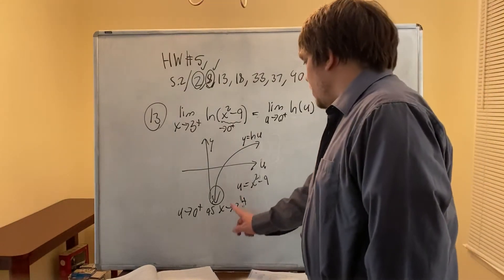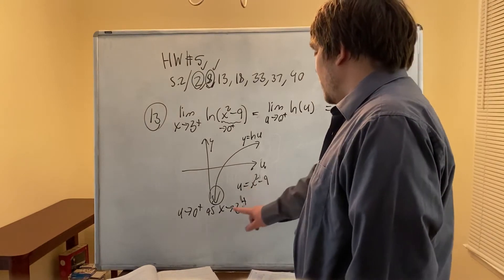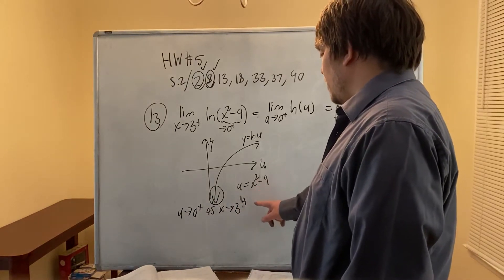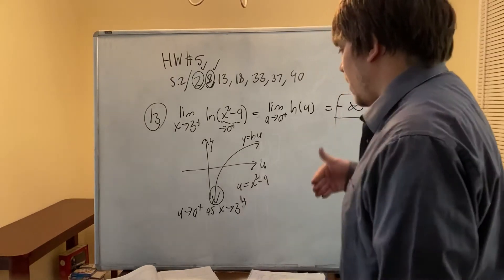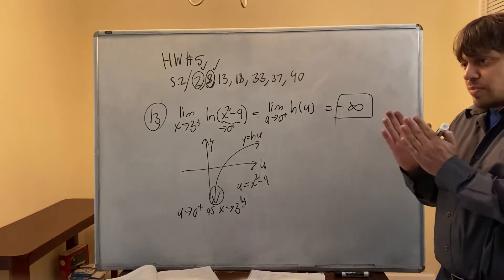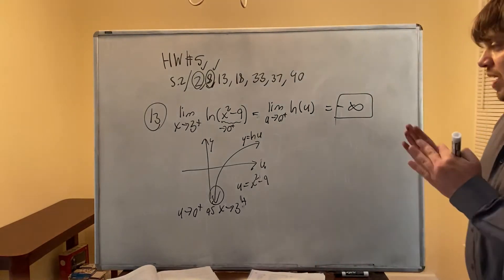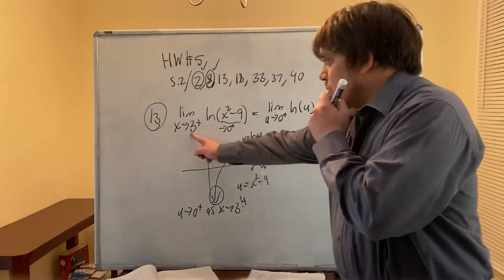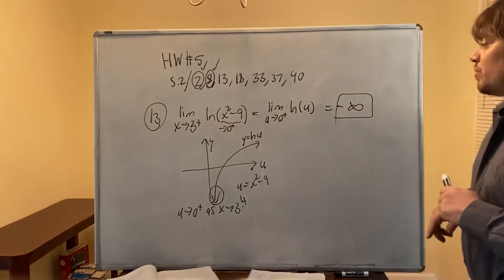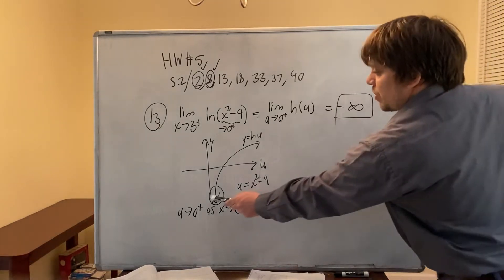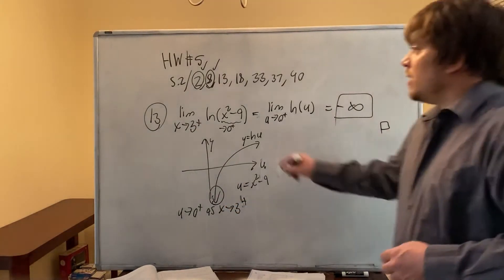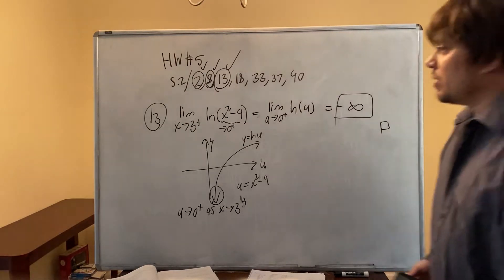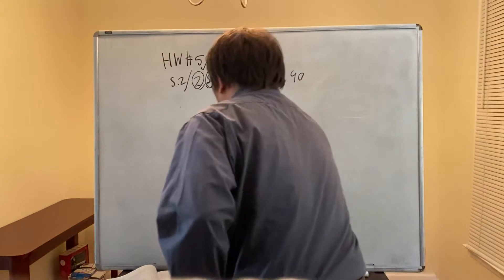To be more explicit: let u equal x² minus 9. As x approaches 3 from the right, x² approaches 9 from the right — meaning the values are slightly larger than 9 — so x² minus 9 approaches 0 from values larger than 0. Thus u approaches 0 from the right, and the limit as u approaches 0 from the right of ln(u) is negative infinity. That's the answer for number 13.